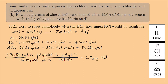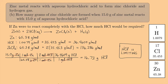We only have 15 grams of HCl available, but we need 16.73 grams for the zinc to react completely. So in this case, HCl — hydrochloric acid — is the limiting reactant. Since HCl is limiting, that's what we'll use to figure out how much zinc chloride is formed.